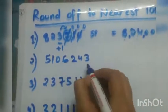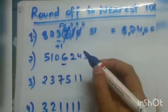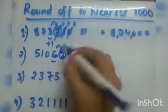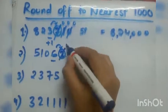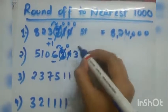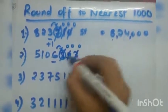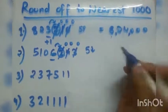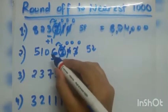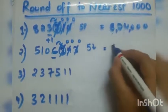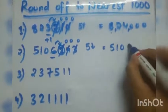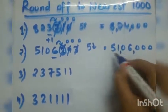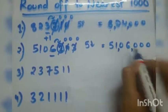Now let's see the next example. The digit in the thousands place is 6. To the right of 6 is 2. Since 2 is less than 5, this will be round down. In round down, the digits after thousands place become zero: 2's place gets 0, 4's place gets 0, 3's place gets 0, and 6 has no change. So the answer is 51,06,000.